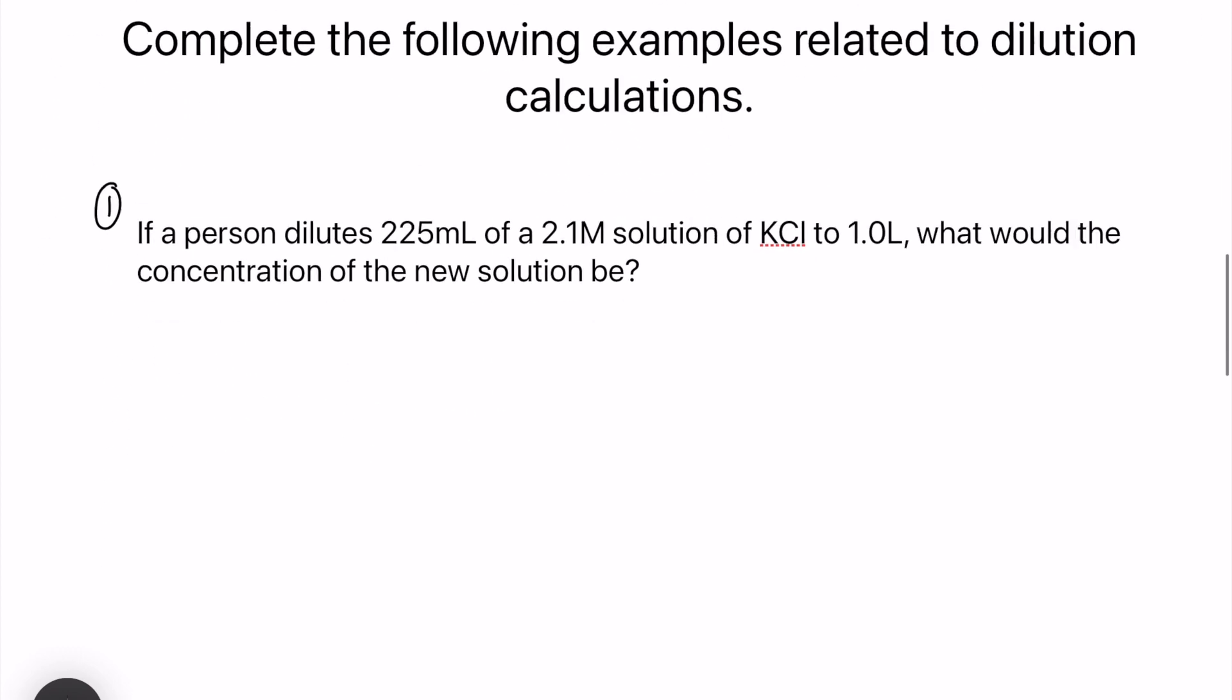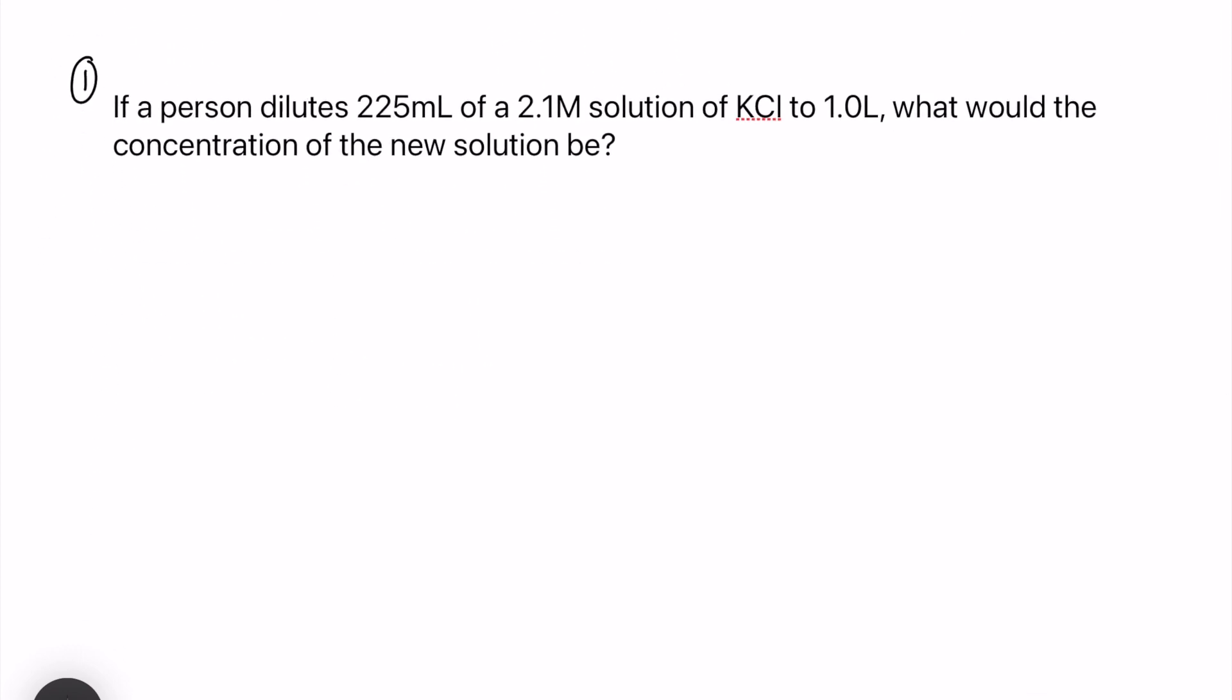So let's jump into number one. It says if a person dilutes 225 milliliters of a 2.1 molar solution of potassium chloride to one liter, what would the concentration of the new solution be? So first off we are going to go through our variables list so we have C1, V1, C2 and V2.